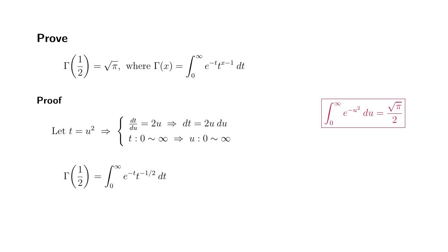Then we're going to rewrite this integral using u. We're going to get this: the limits are the same going from 0 to infinity. Then you have e to the negative u squared. And if you put the u squared here, because that t is u squared,